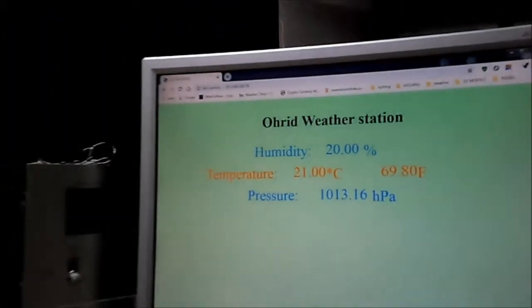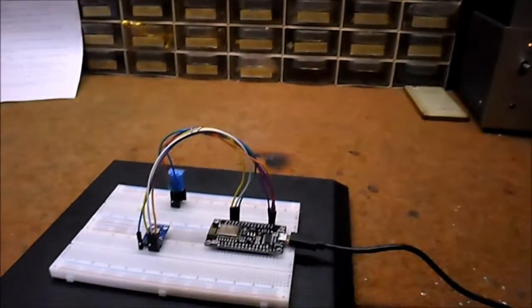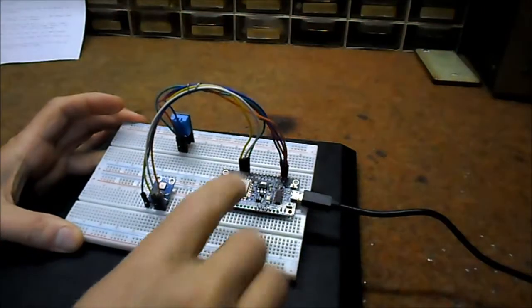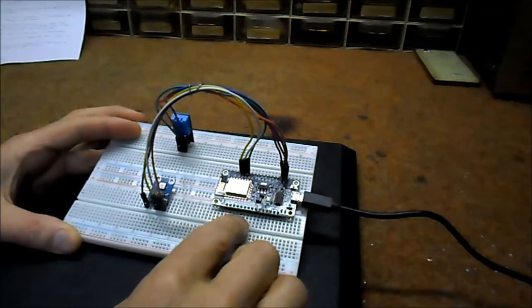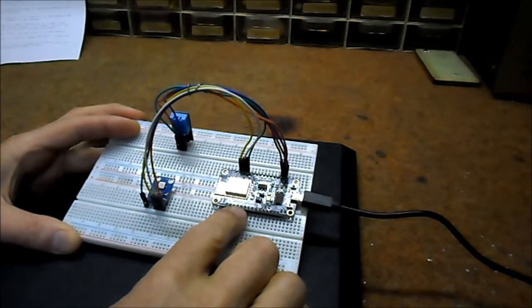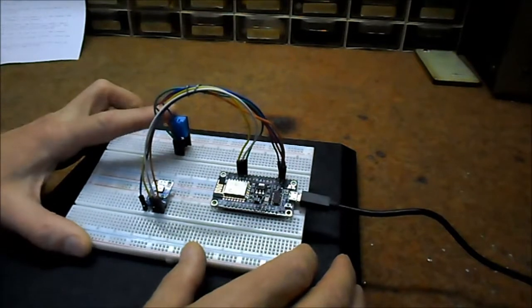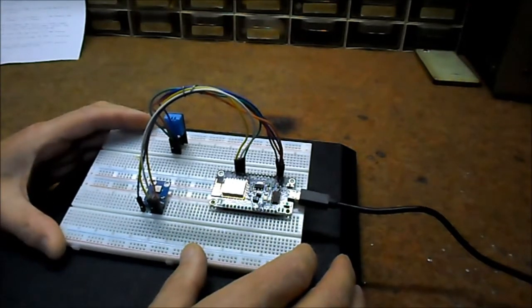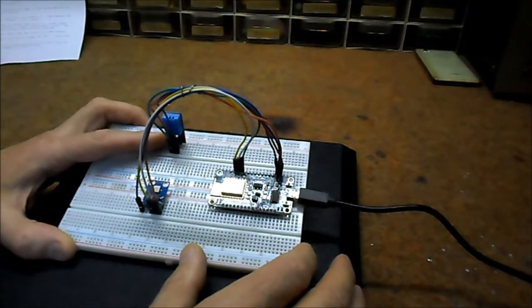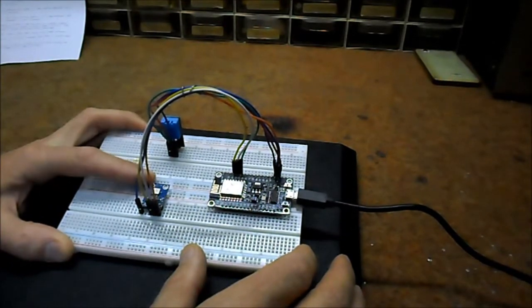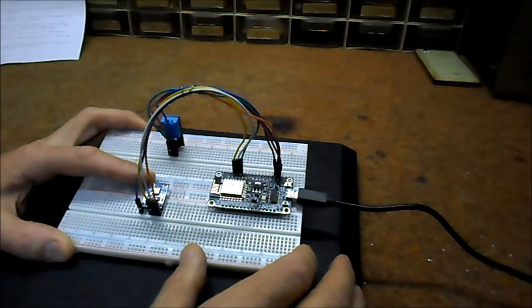The device is extremely simple to build and contains only three components. The first is ESP8266 NodeMCU microcontroller unit, the DHT11 temperature and humidity sensor, and BMP180 atmospheric pressure sensor.